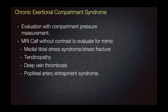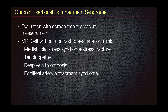Chronic exertional compartment syndrome can be evaluated by measuring the pressure of the compartments of the calves. If there is a contraindication, MRI of the calf without contrast is usually done to evaluate for other possible mimics, such as medial tibial stress syndrome or stress fracture, any tendinopathy of the calf, deep vein thrombosis, or possible popliteal artery entrapment syndrome.